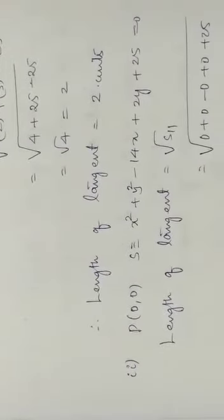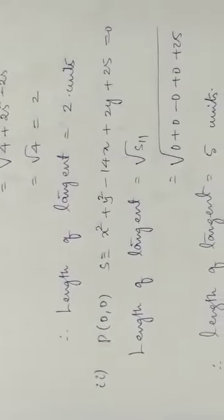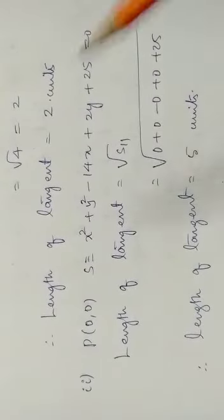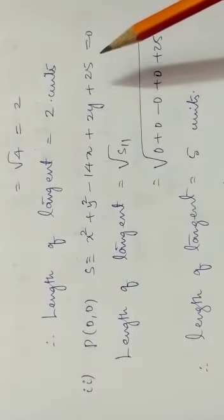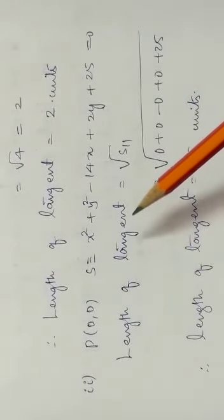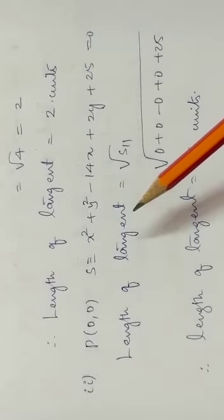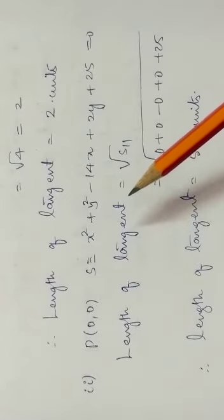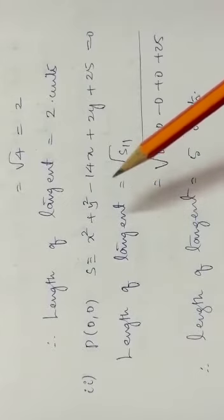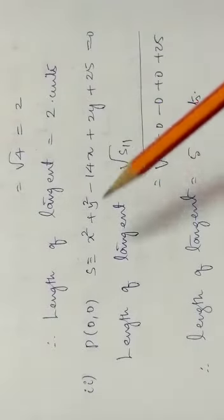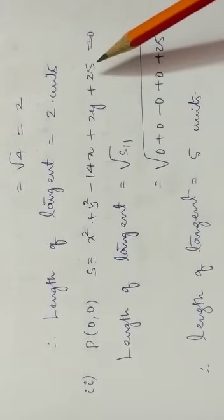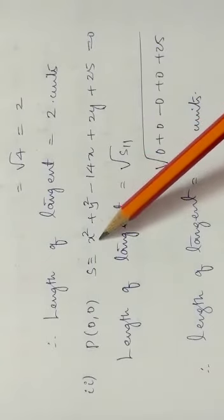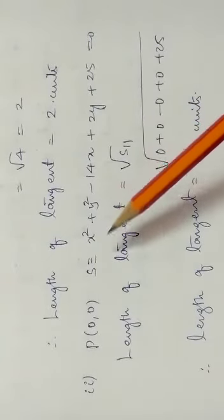Next bit: they gave point 0, 0, that is origin, and a circle. Need to find length of tangent. Length of tangent formula is root S11. S11 is simple: take the point and replace in the circle. Replace in S.